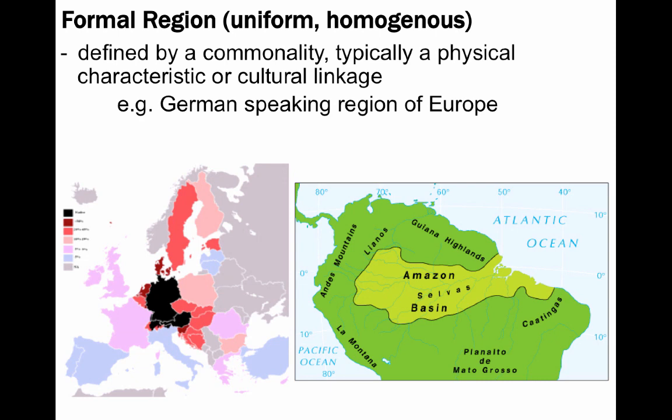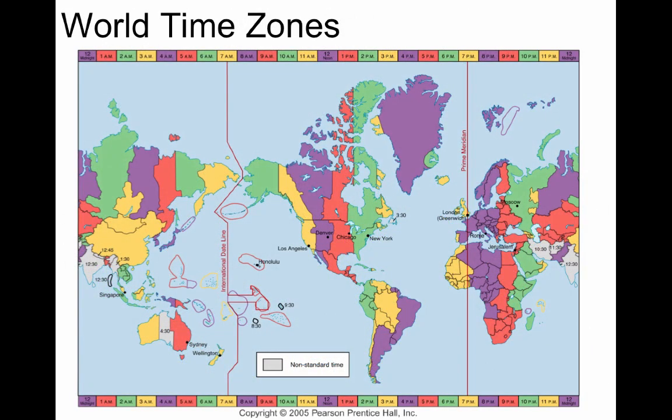Formal regions can also be based on cultural linkages and other human-caused divisions. For instance, this map highlights where German first speakers are prevalent in Europe. Formal regions can be divided by means of other human characteristics such as religion, ethnicity, political boundaries, and so on. Even time zones meet the criteria of a formal region — you know when you're in one, you know when you're out of one.